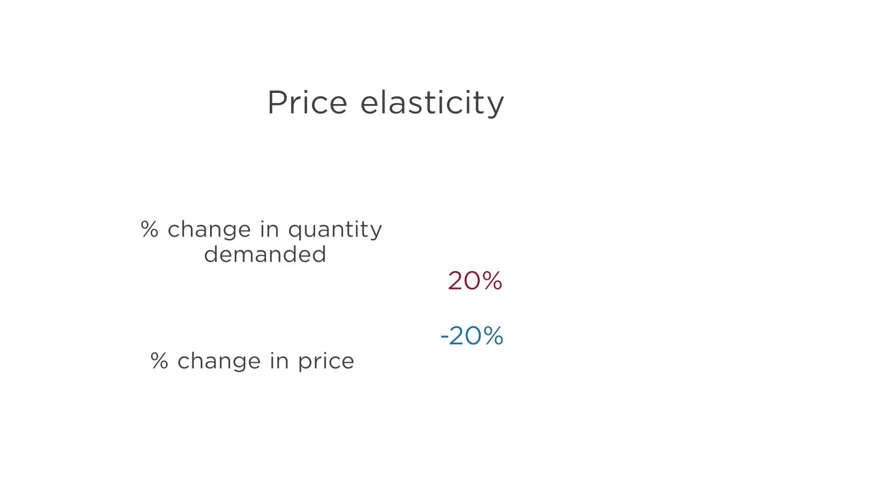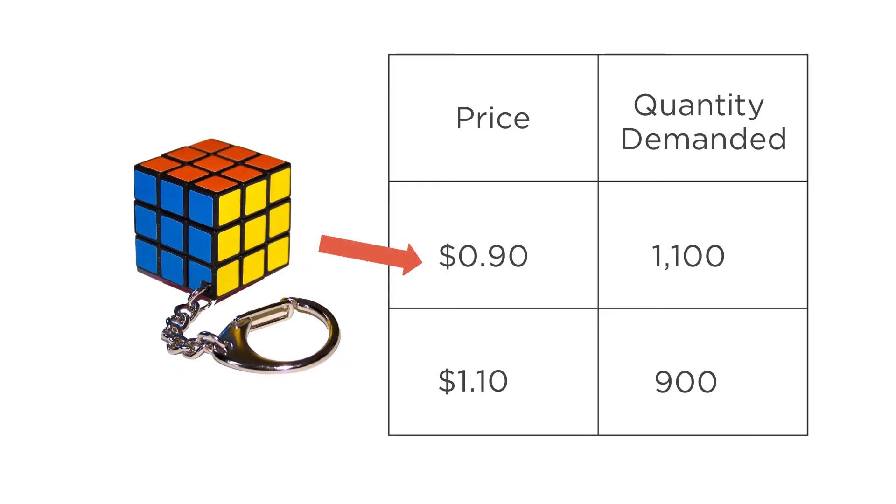Price elasticity of demand is the percent change in quantity demanded, 20%, divided by the percent change in price, negative 20%, which comes out to an elasticity of negative 1. And dropping the minus sign, we get an elasticity of 1. The important point is that with this midpoint method, we arrive at the same elasticity whether we consider increasing the price from $0.90 to $1.10, or dropping the price from $1.10 to $0.90.